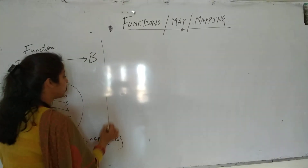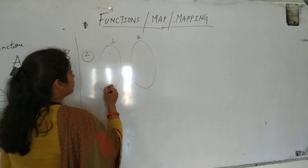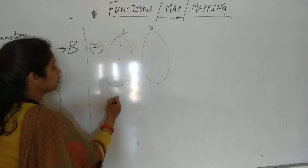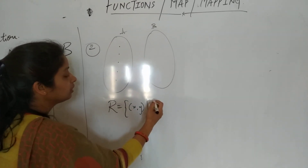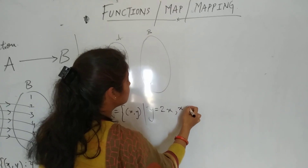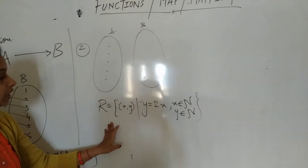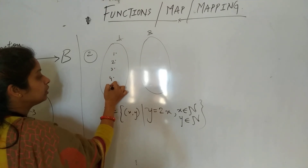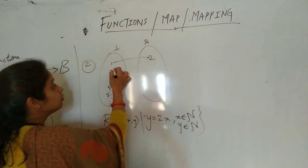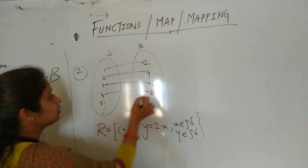Let us take another example. Suppose this is set A, this is set B. Let us define a relation R: {(x, y) such that y = 2x}, where x belongs to the set of natural numbers and y also belongs to the set of natural numbers. If this is 1, 2, 3, 4, 5 — then 1 maps to 2 (since 2×1=2), 2 will map to 4, 3 will map to 6, 4 will map to 8, likewise.